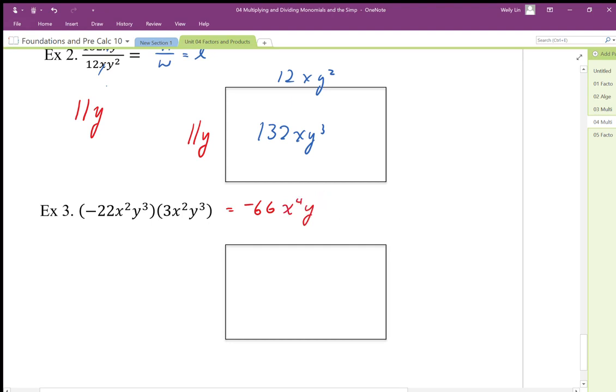This is going to give me a length of negative 22x²y³. This one piece, we're just going to group it all together as 3x²y³, and then we get our area as a product.